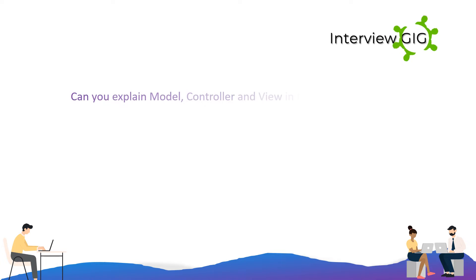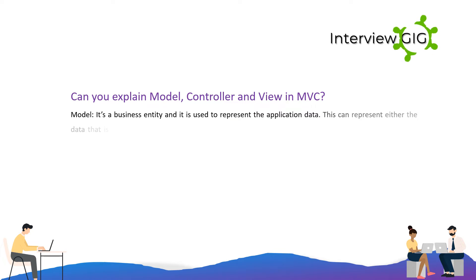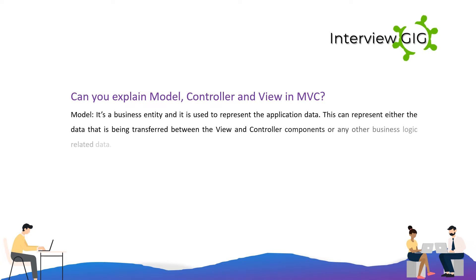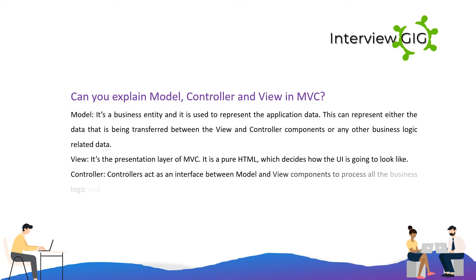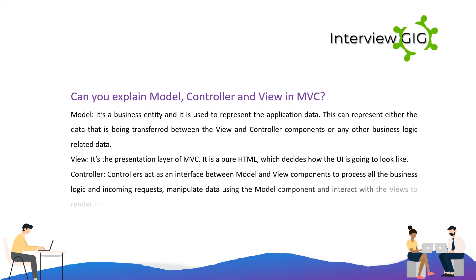Can you explain Model, Controller, and View in MVC? Model: it's a business entity and it is used to represent the application data. This can represent either the data being transferred between the view and controller components or any other business logic related data. View: it's the presentation layer of MVC. It is pure HTML which decides how the UI is going to look. Controller: controllers act as an interface between model and view components to process all the business logic and incoming requests, manipulate data using the model component, and interact with the views to render the final output.